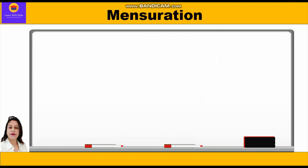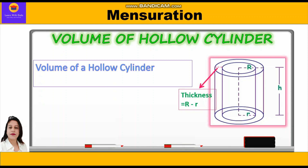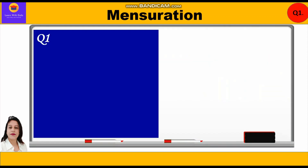Now let us revise the formula for volume of a hollow cylinder. As you can see in the given figure, we have outer radius, inner radius, and height. Thickness is always outer radius minus inner radius. Volume of a hollow cylinder is outer volume minus inner volume, that is πR²h − πr²h. Taking πh common, volume equals πh(R² − r²).